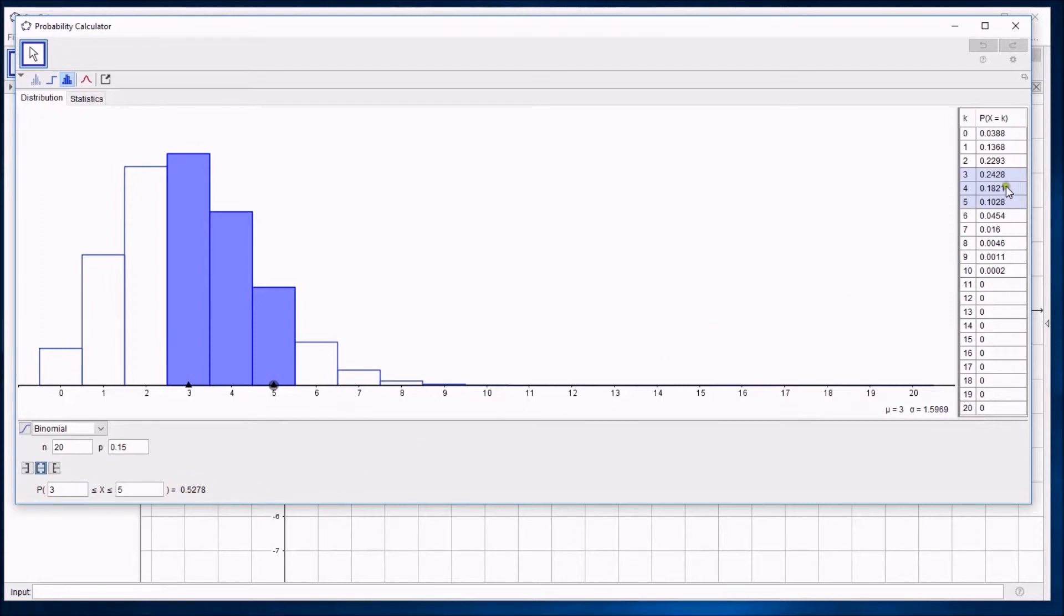Actually, it also shows you over on the right the probabilities of each individual outcome. And if you add those three together, 3, 4, and 5, those probabilities, we will get the 0.5278. This is exactly like what you might have calculated from a calculator, or by looking up in the old-fashioned probability tables.